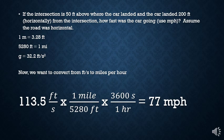Now I want to convert that into miles per hour. So I have 113.5 feet per second times one mile over 5,280 feet. So feet would cancel here. Times 3,600 seconds divided by one hour. So my seconds would cancel. And I get that the car was traveling 77 miles per hour.